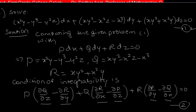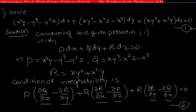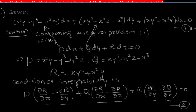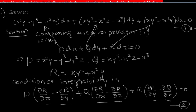Comparing equation one with the standard equation P dx + Q dy + R dz = 0, we identify the values of P, Q, and R. So P = x²y - y³ - y²z, Q = xy² - x²z - x³, and R = xy² + x²y.